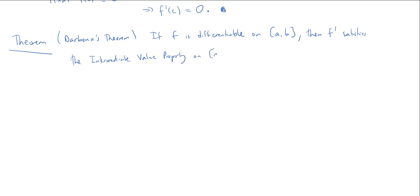This means: if you look at f′(a) and f′(b), and say f′(a) < f′(b), then every value between f′(a) and f′(b) has a pre-image in [a, b]. Importantly, this does not say the derivative is necessarily continuous — it just says the derivative satisfies the intermediate value property.